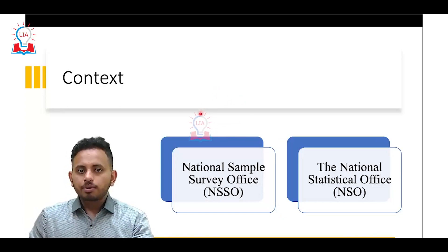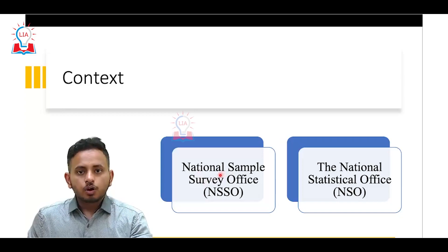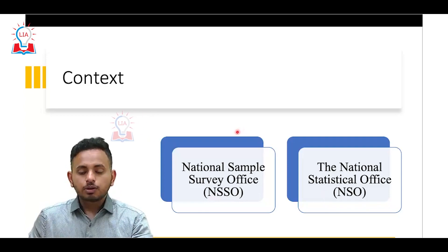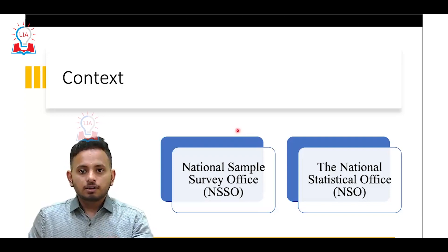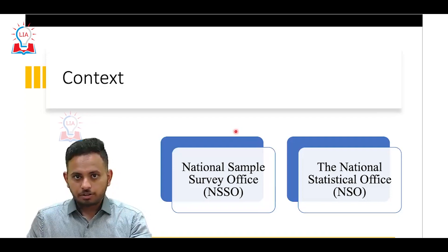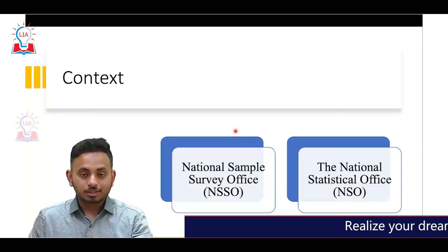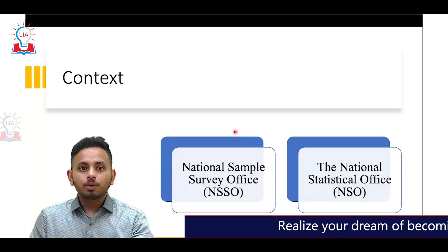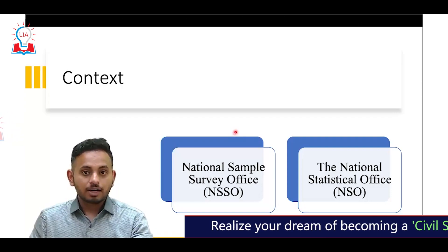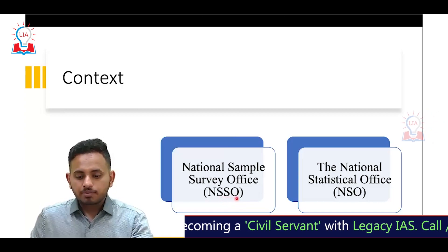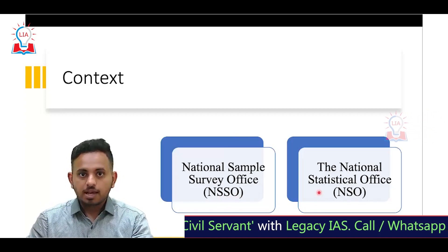There are two organizations which came out with their reports: the National Sample Survey Office (NSSO) and the National Statistical Office (NSO). These are two important organizations which work under MoSPI — the Ministry of Statistics and Programme Implementation — a ministry dedicated to data collection, data processing, and producing recent data related to the Indian economy.